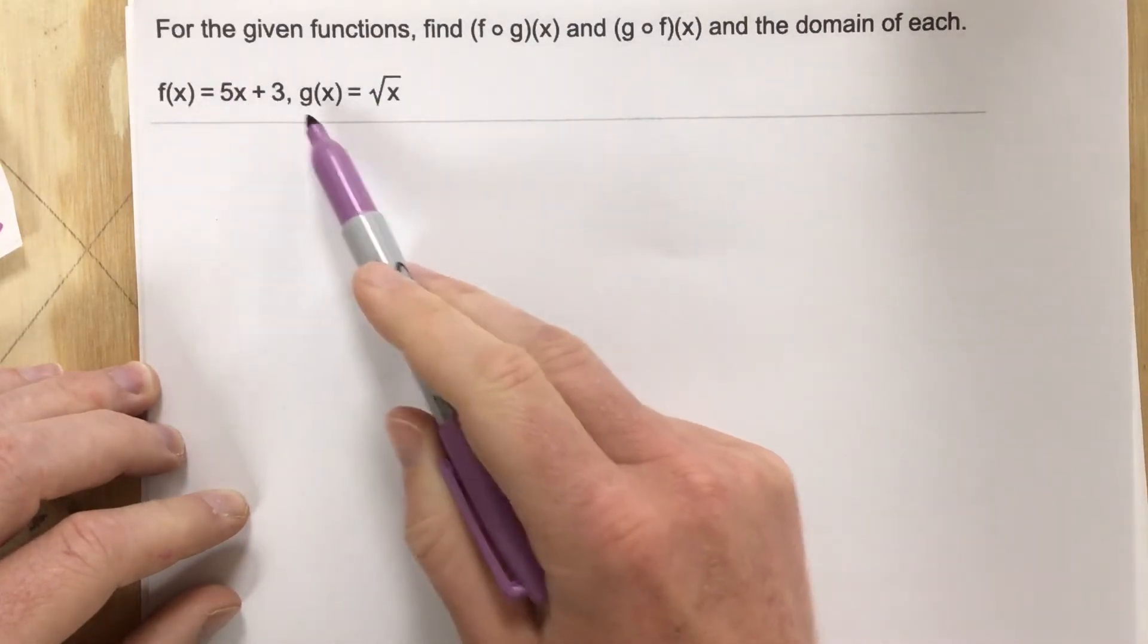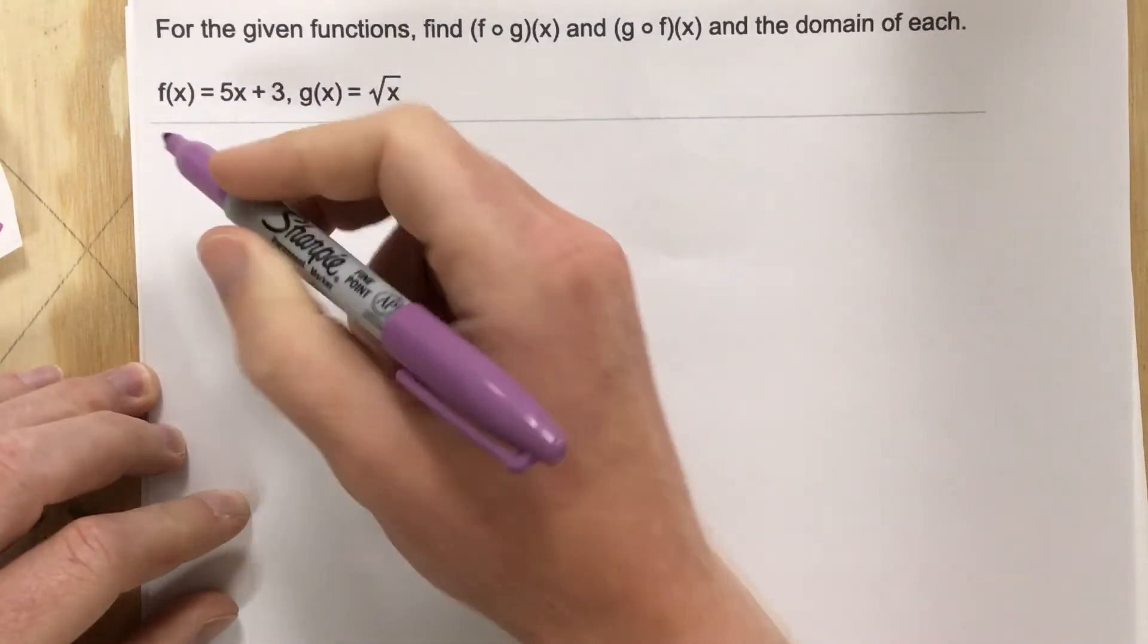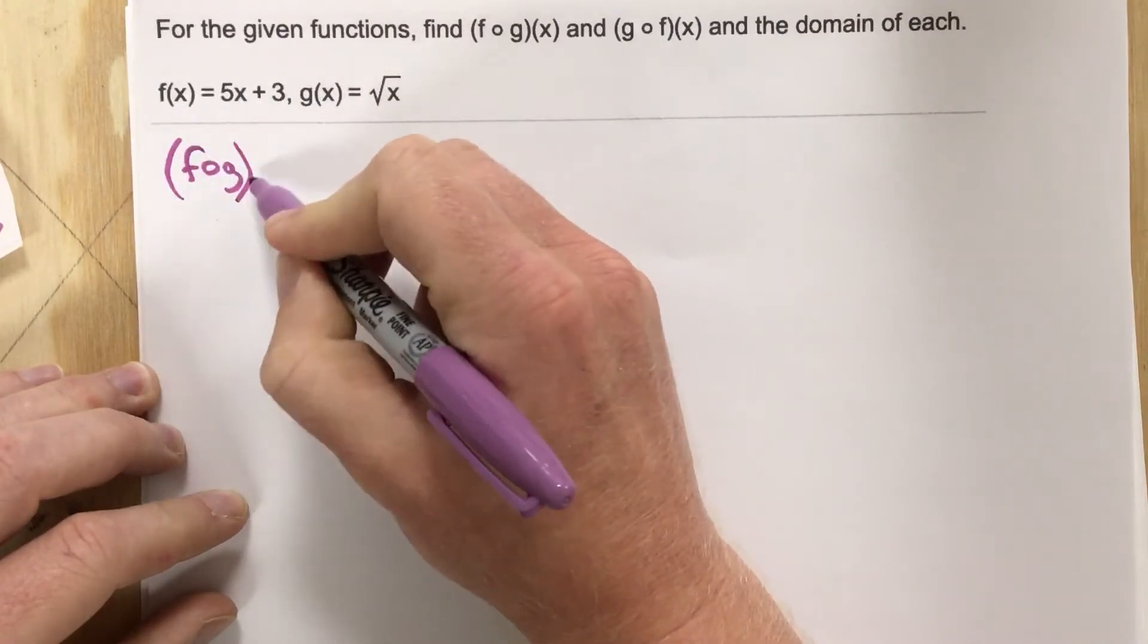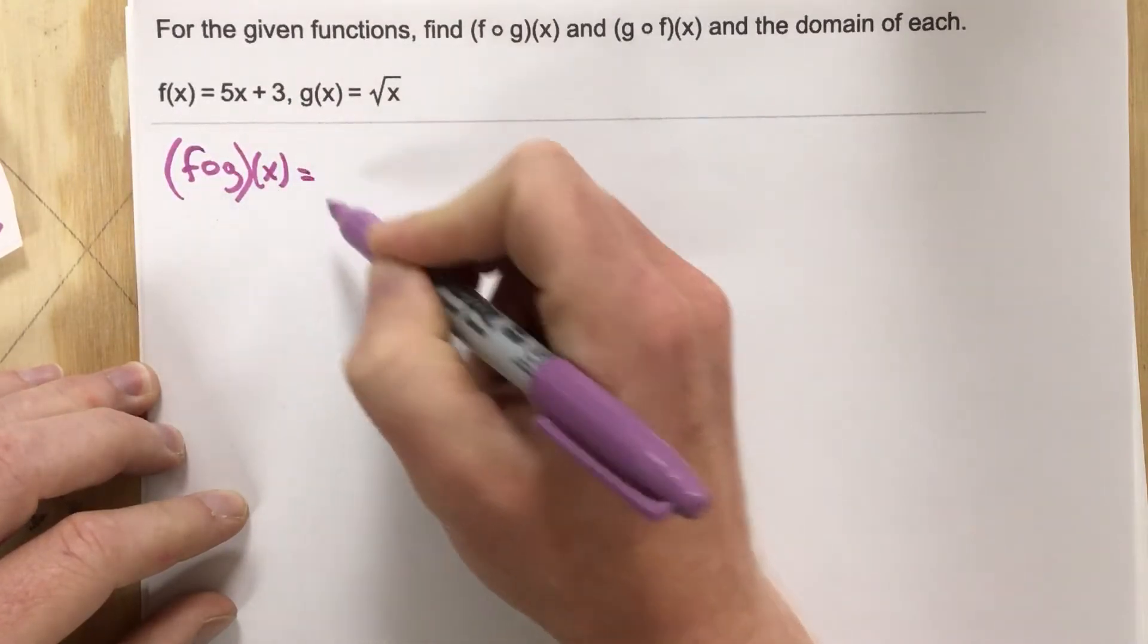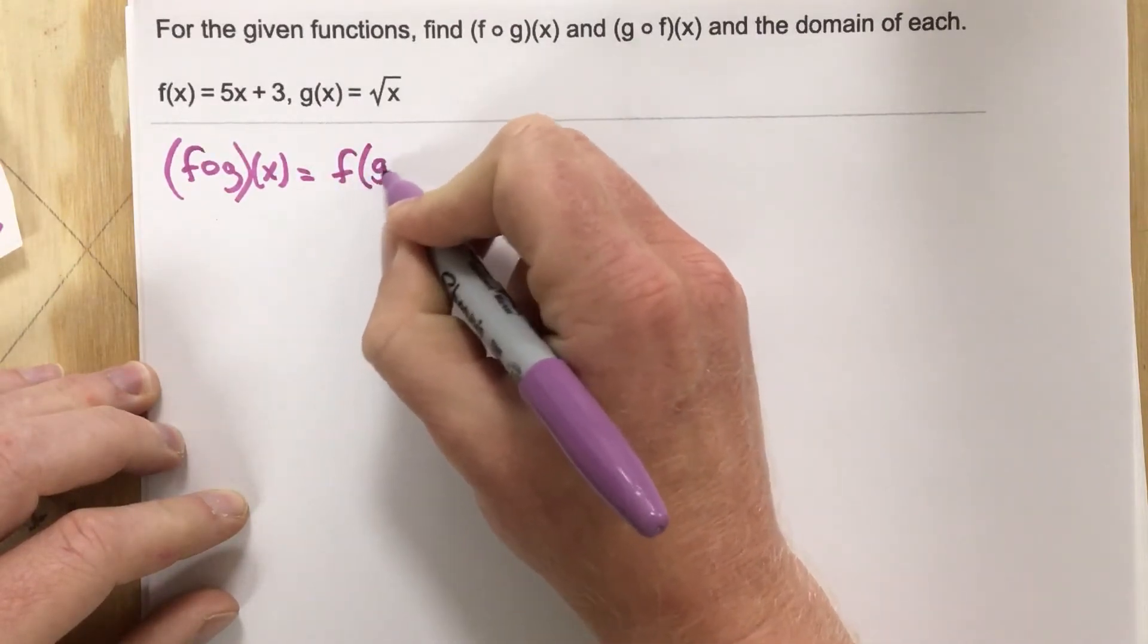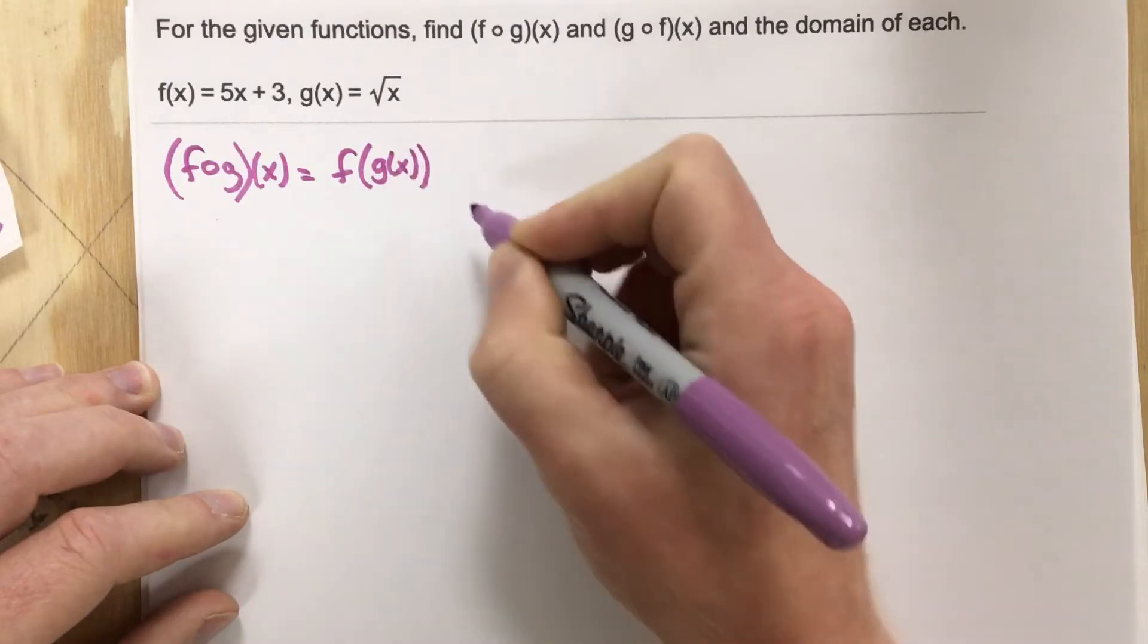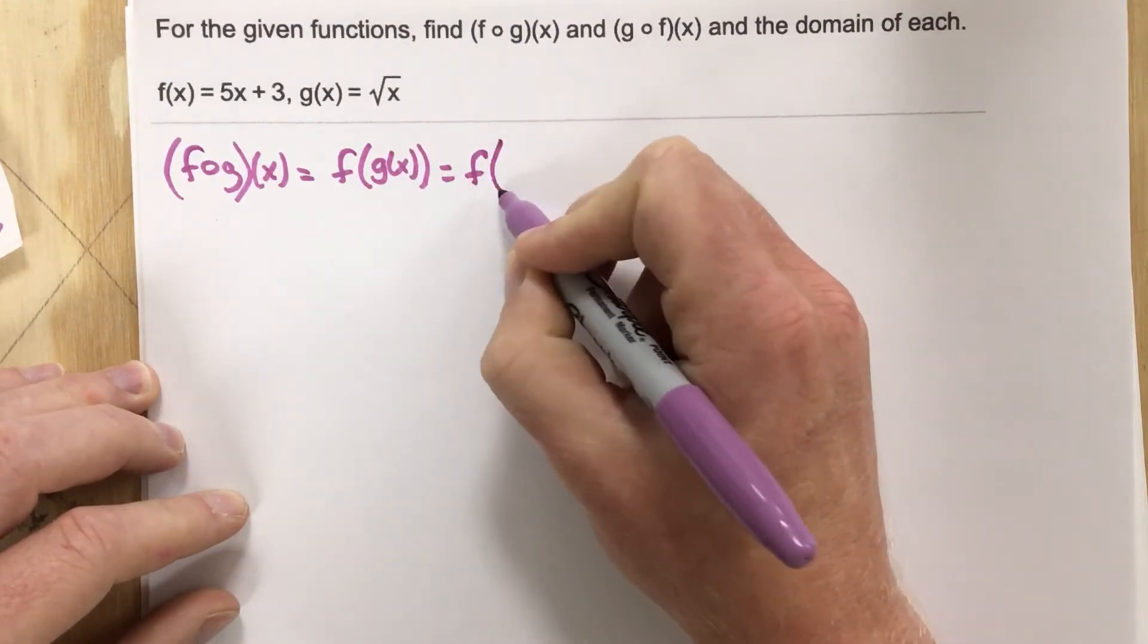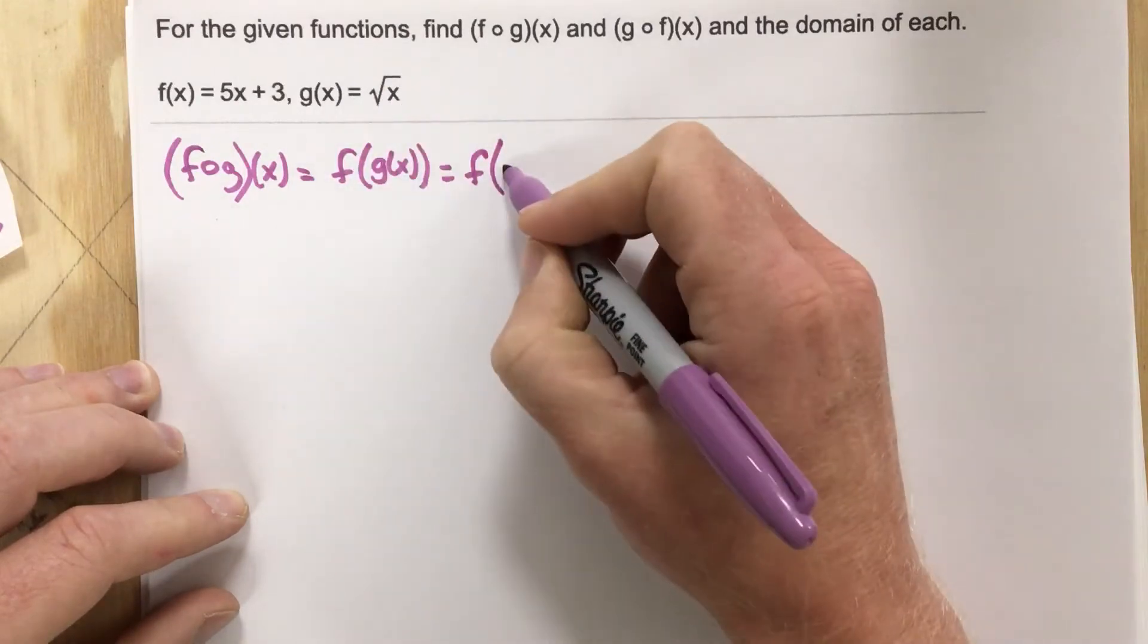They give you f of x and g of x, and want you to find f of g of x. f of g of x is f with an input of g of x, which is the square root of x.